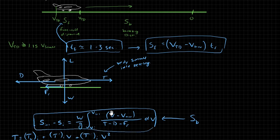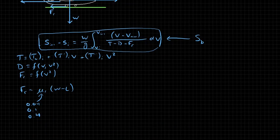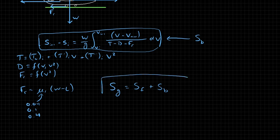Just a different application. And finally, putting those two together, we can get that the ground roll in landing is just equal to the sum of the two: S f plus S b. And there we have it.